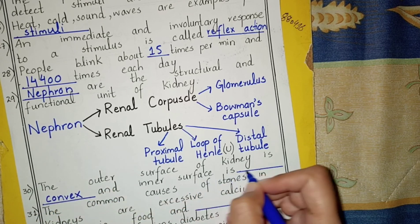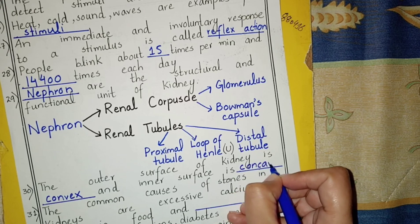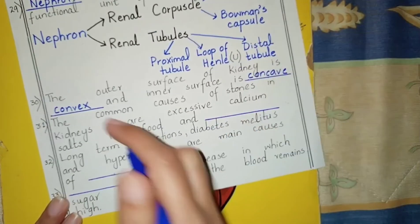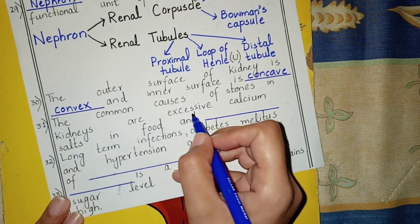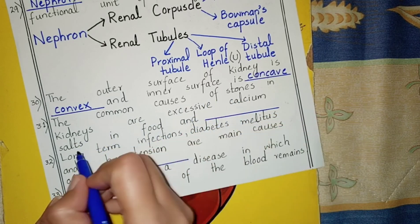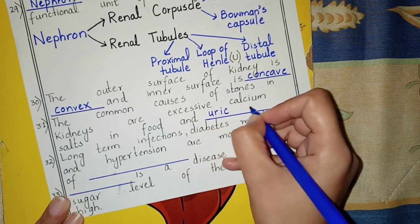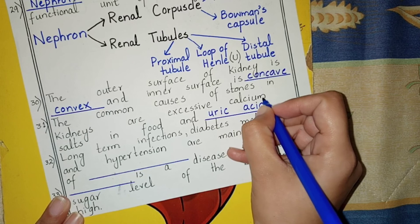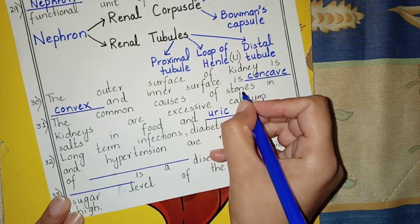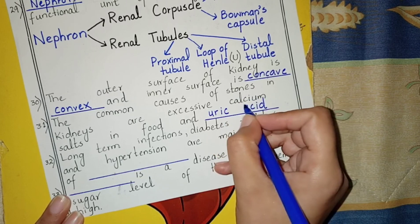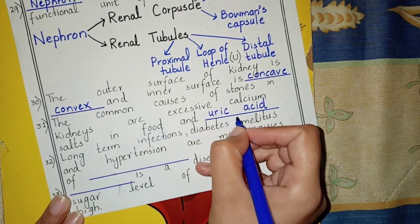The outer surface of the kidney is convex and the inner surface is concave. The common causes of stones in kidneys are excessive calcium salts in food and uric acid.